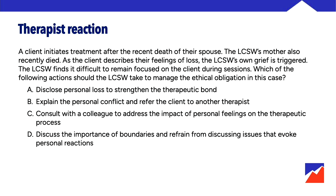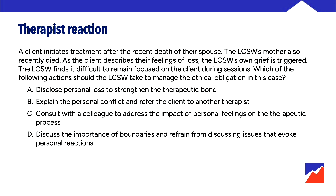With that basis we can start to look through the response options. Option A — disclose personal loss to strengthen the therapeutic bond. There's a role for self-disclosure in therapy, but here the client would be put in the position of taking care of the social worker, so that seems unlikely to be a good fit. Option B — explain the personal conflict and refer the client to another therapist. There are times when referring out is appropriate in response to a counter-transference issue, but that's not your first stop.